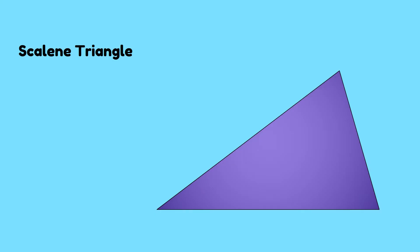Next, a scalene triangle has three sides, but as you can see, none of the sides are equal. None of its angles are equal, and it does not have any lines of symmetry.